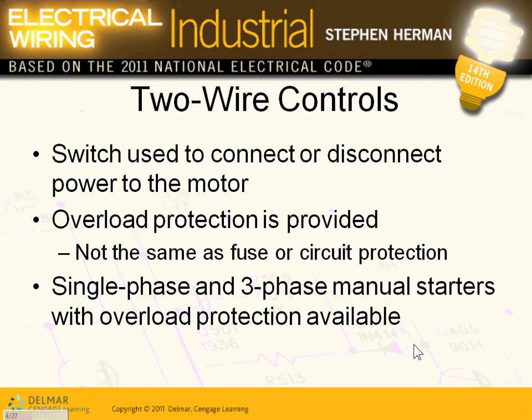Two-wire controls or three-wire controls. They call it two-wire control because if you have a thermostat in your house — the thermostat, if the power goes off and comes back — do you think the furnace will continue to work? Two-wire control: if the power goes off, the system stops. If the power comes back, the system will automatically start. You do this with heating and cooling systems.